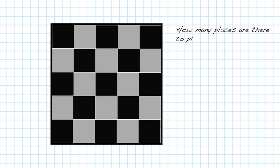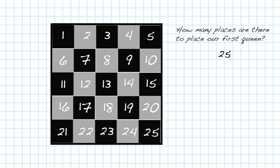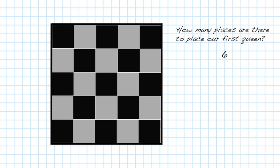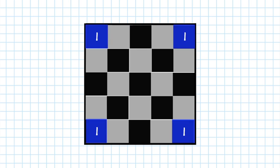How many places are there to place our first queen? You might say there are 25, as there are 25 squares on the board. While this is true, in some sense the answer is really six. Why six? Well, if we allow ourselves to rotate the board, the four corners are all the same. And those really are the same opening move.